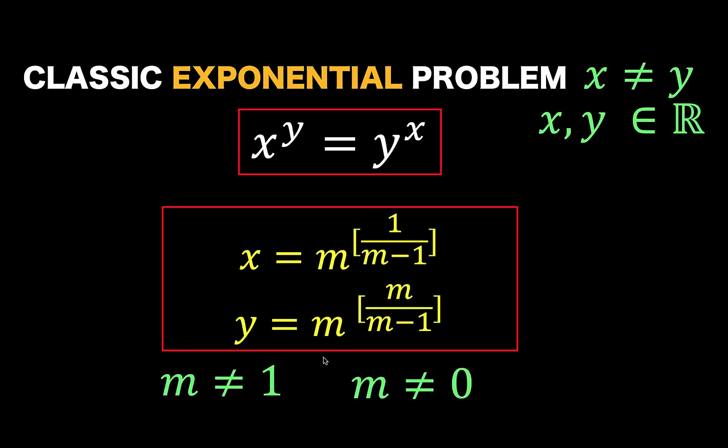But notice that there should be some restrictions to the value of m. Because division by 0 is undefined, we cannot let m to be equal to 1. And since 0 raised to 0 would result to an indeterminate form, then we also restrict that m cannot be equal to 0.